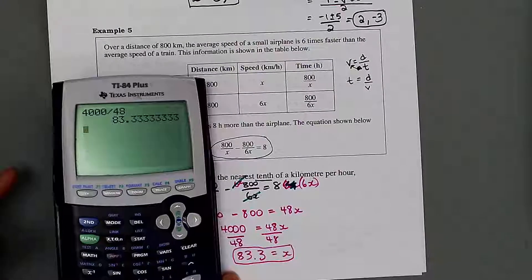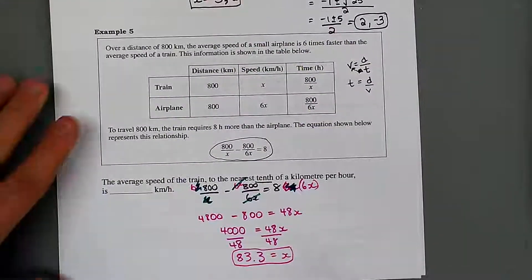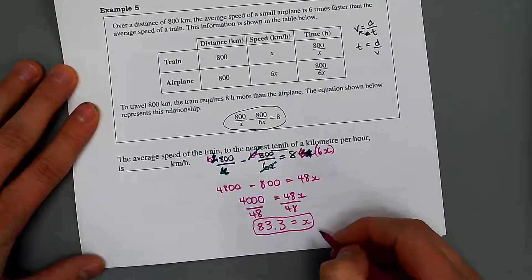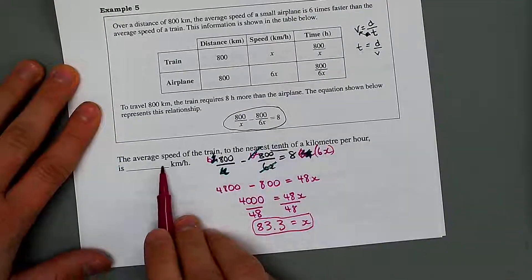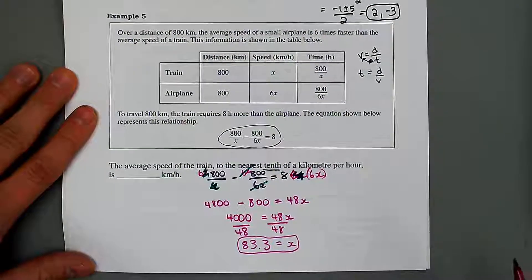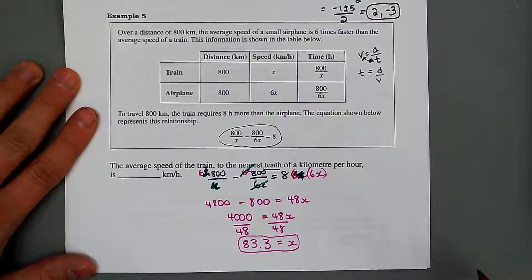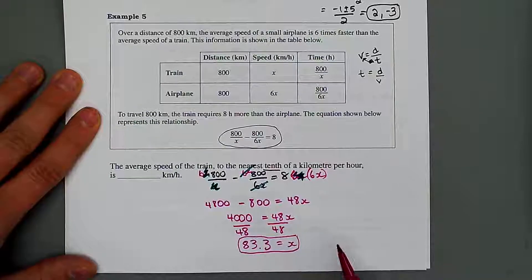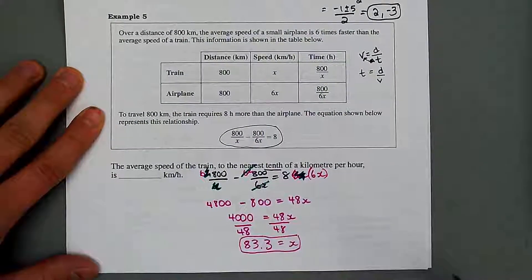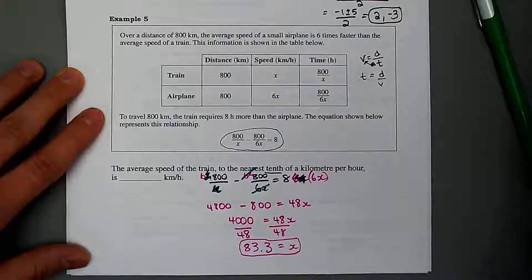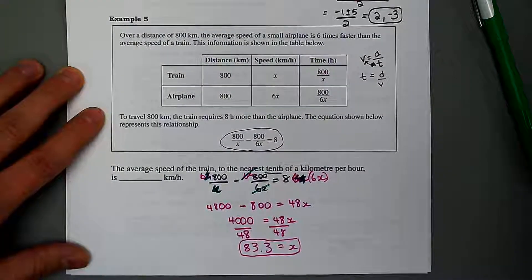4000 divided by 48 is 83.3 when rounded to the nearest tenth kilometers per hour. If this were a diploma written response question, we would say the average speed of the train to the nearest tenth is 83.3 km/h. Occasionally we will get problem-solving questions like this — good luck as we solve rational equations.